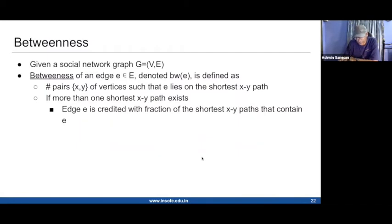We've been looking at specialized algorithms. Last time we looked at this notion of the betweenness of an edge. Given a social network graph, the betweenness of an edge, denoted bw(e), is basically the number of pairs of vertices x, y such that the edge e lies on a shortest x-y path. Sometimes there can be multiple shortest x-y paths.